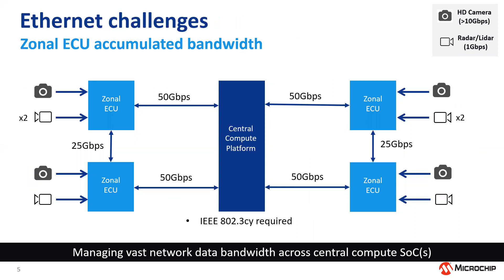This zonal architecture does bring some challenges, and one of the consequences is the accumulation of bandwidth. We have here a simple block diagram example where we have four zonal ECUs connected to a centralised compute platform. Each ECU has an HD camera connected consuming just more than 10 gigabits, and up to six radar or LiDAR sensors consuming about one gigabit per second. You can see very quickly you accumulate bandwidth between the zonal ECUs — for example, you need a 25 gig link if you're going to have redundancy as well.